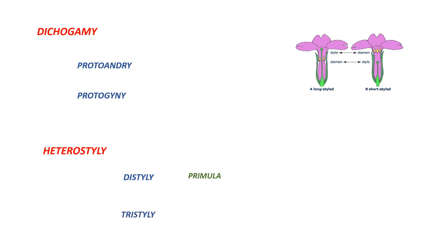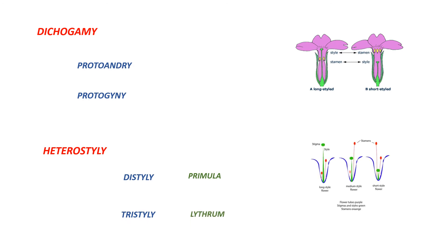Tristyly is the next type of heterostyly. It is seen in lythrum. In lythrum, there are three types of flowers: one with long style, the second with medium style, and the third with short style. Again here, due to the difference in the length of the style and stammens, self pollination does not occur and they promote only cross pollination. This is similar to diestyly.